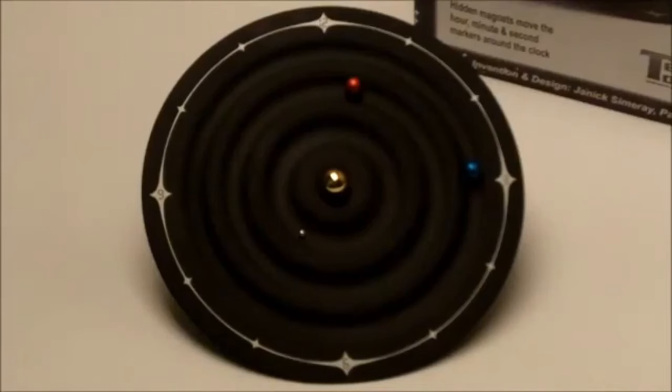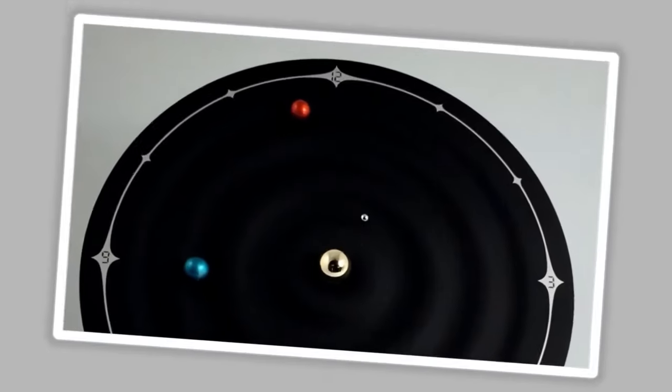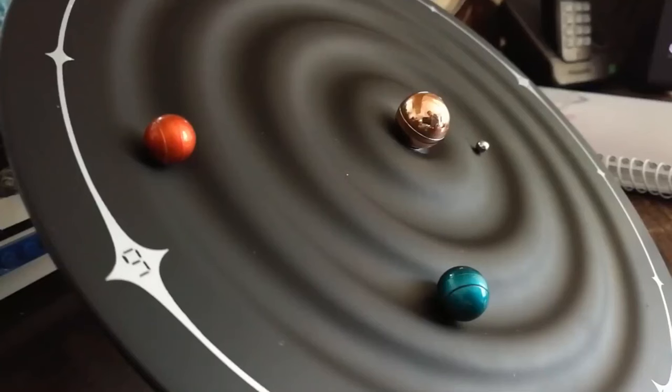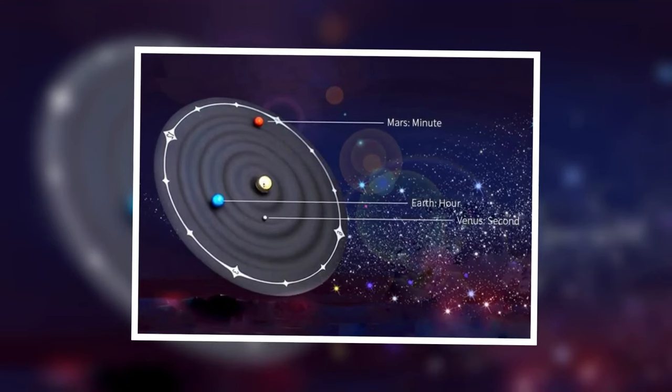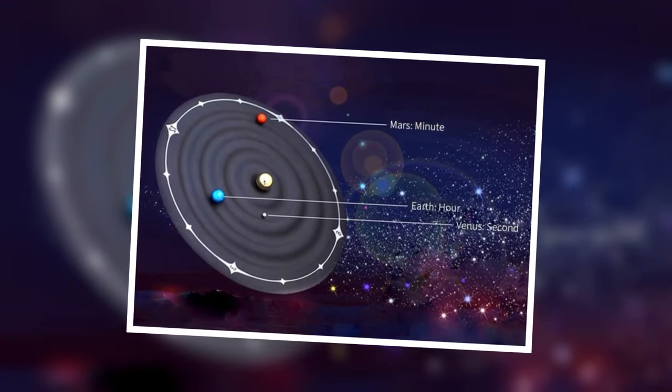The Orbit Space Clock serves as both a functional timekeeper and a mesmerizing piece of art, adding a touch of celestial elegance to any room. With its intricate detailing and captivating motion, it offers a unique way to experience the passage of time. This space-inspired clock is a true conversation starter and a testament to the harmonious blend of science and aesthetics.